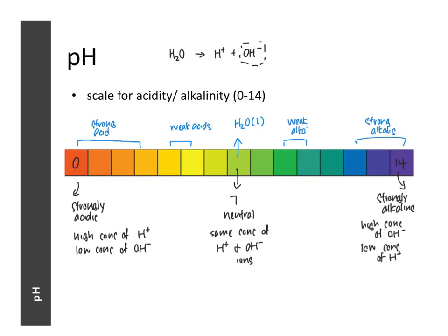These are only rough gauges, because a very large amount of a weak acid can cause the pH to go below 4 or even lower, and a large amount of a weak alkali can push the pH beyond 8 or 9. So the ranges given are approximate.